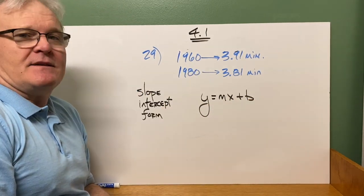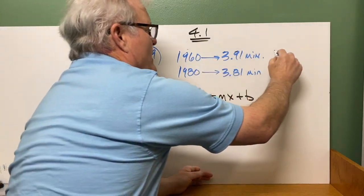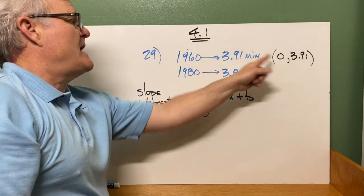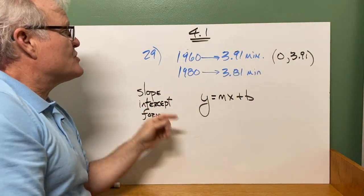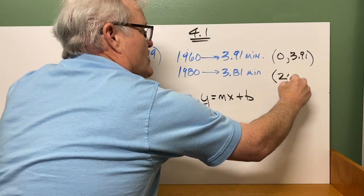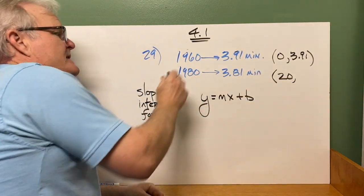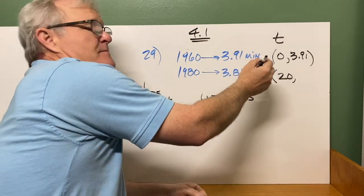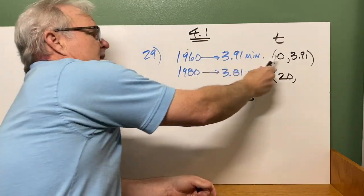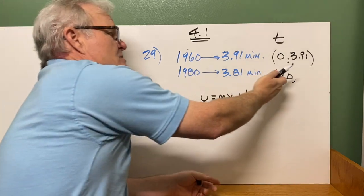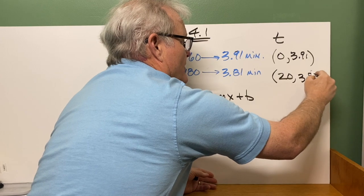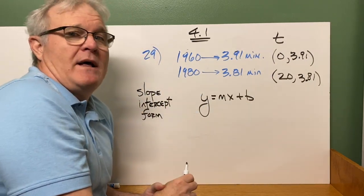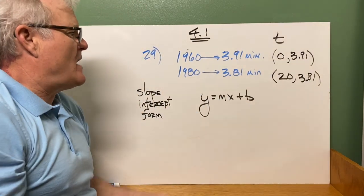So this 1960 and 3.91 really is the coordinate (0, 3.91). Because it's 0 times since 1960. 1980 is 20 years past that. So the x-coordinate is going to be 20. Because again, the x-coordinate is the amount of time past 1960. So we're going to let this be t, time since 1960. So in 1960, it was 0 years since 1960. And in 1980, it was 20 years past that. And it was 3.81 for this. So we have the amount of time since 1960 and the actual time in the 1-mile run. So for this, we're going to do y equals mx plus b.